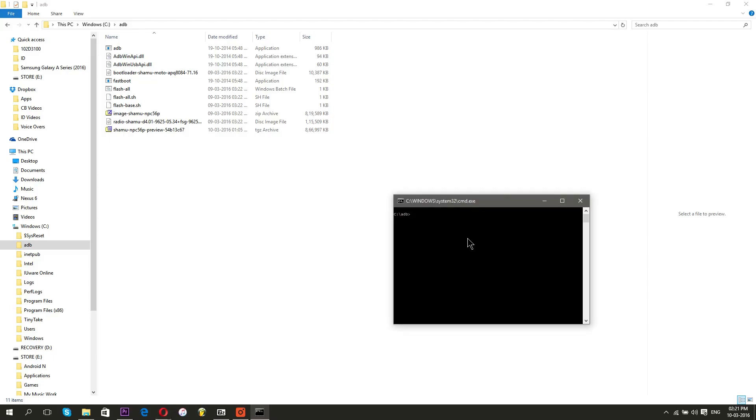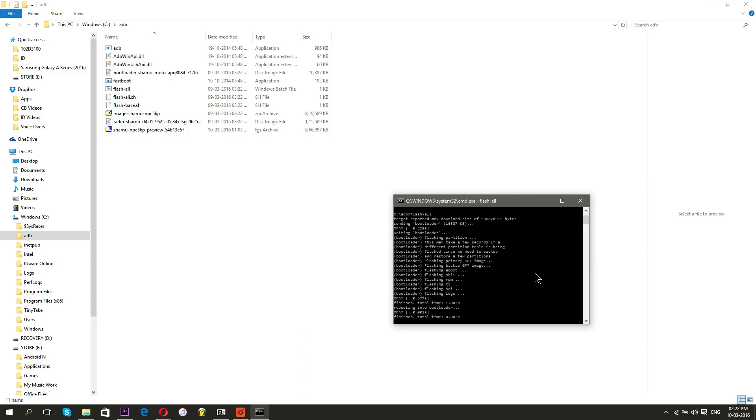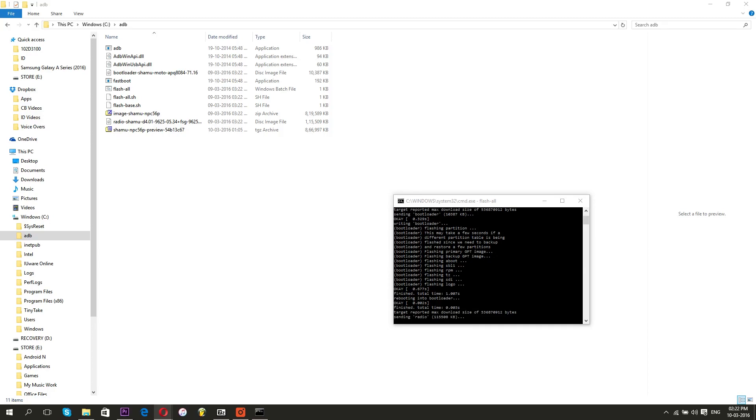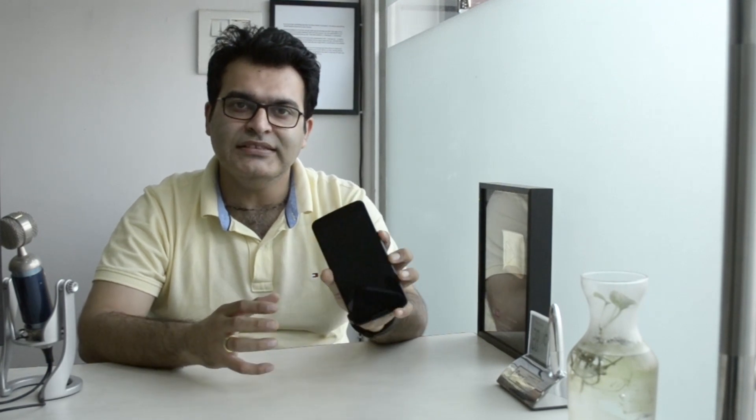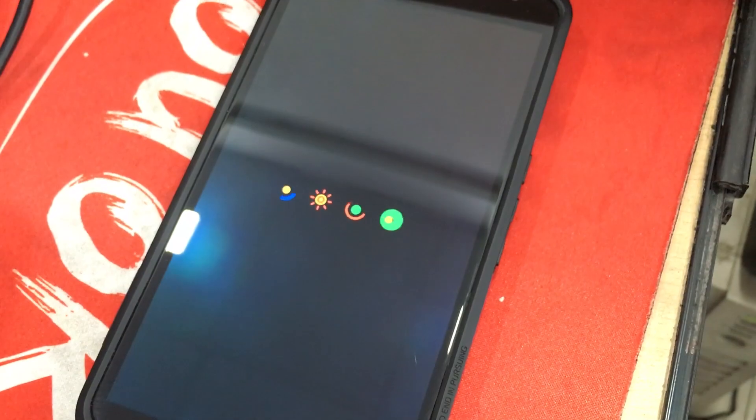You just need to reboot into the fastboot mode and from there you need to flash the image file as well as radio file depending on which device you're flashing. Once it is done, it will reboot the device into Android N. This is how simple it is and it will continue to be same whether you're installing developer preview or any other build. All you need to do is run a flash-all file either on Mac or Windows, and this is how Android N looks like.